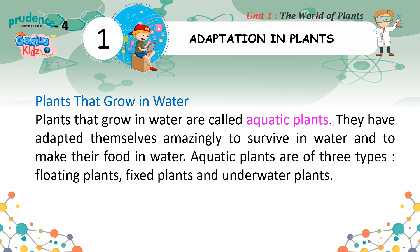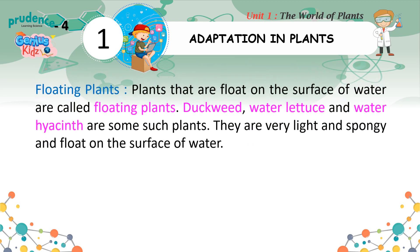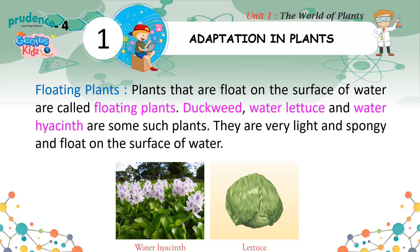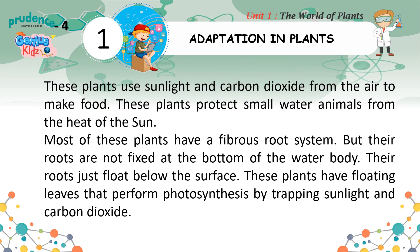Plants that grow in water are called aquatic plants. They have adapted themselves amazingly to survive in water and to make their food in water. Aquatic plants are of three types: floating plants, fixed plants, and underwater plants. Floating plants float on the surface of water — duckweed, water lettuce, and water hyacinth are examples. They are very light and spongy, use sunlight and carbon dioxide to make food, and protect small water animals from the heat of the sun. Most have a fibrous root system that floats below the surface, and their floating leaves perform photosynthesis.